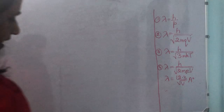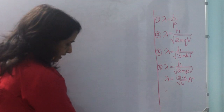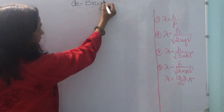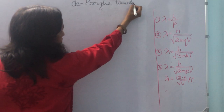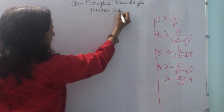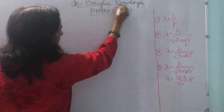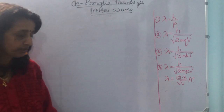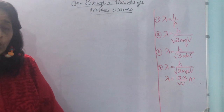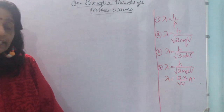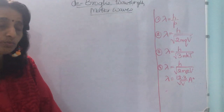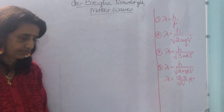Hello students. In today's lecture we will discuss the different forms of de Broglie wavelength and the concept of matter waves. Matter waves are observed for extremely small particles with very small mass, and the particles should be in motion. If they are stationary you will not observe matter waves. Let us begin.